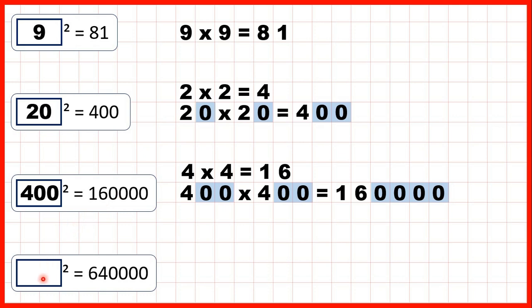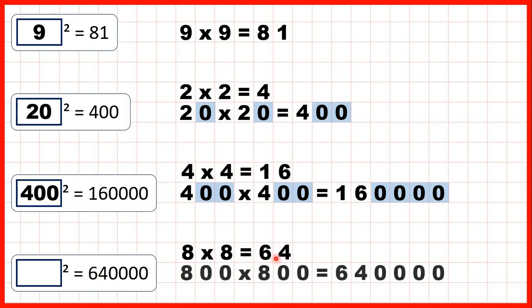So now, what squared equals 640,000? Well, if we ignore the zeros for a moment, we know that 8 times 8 is 64, which means that 800 times 800 is 640,000. So 800 squared equals 640,000.